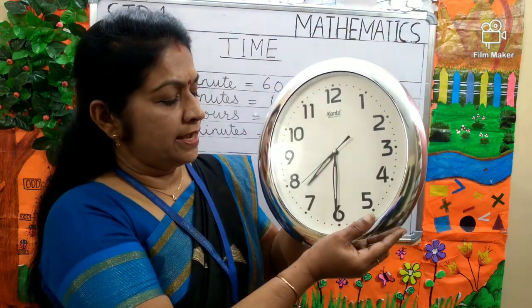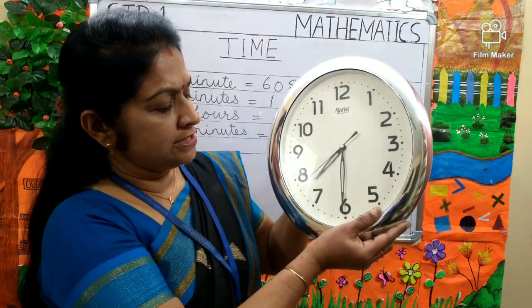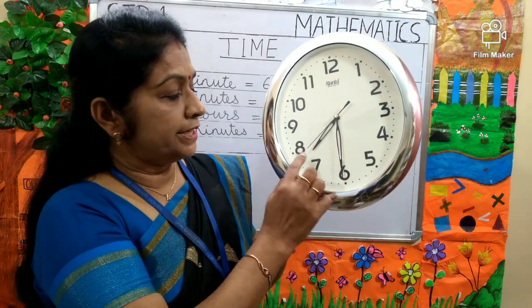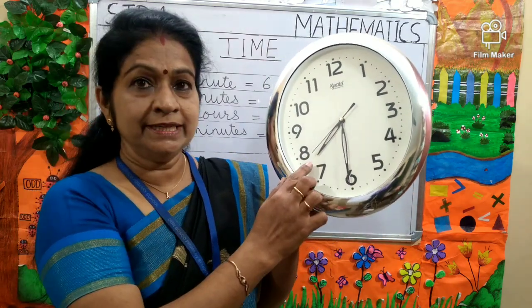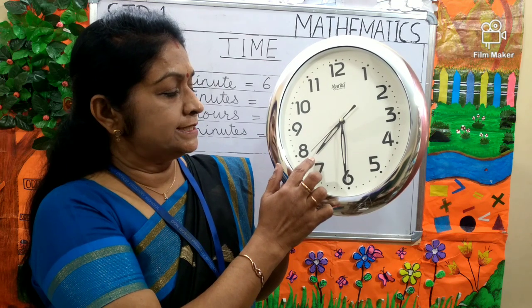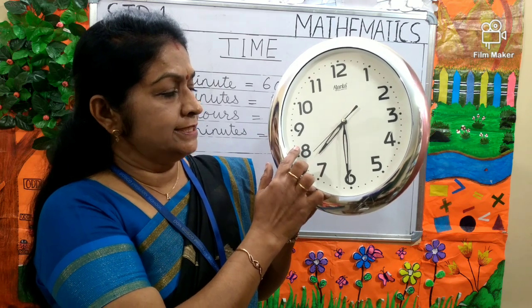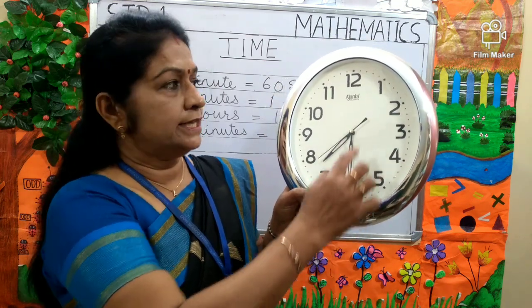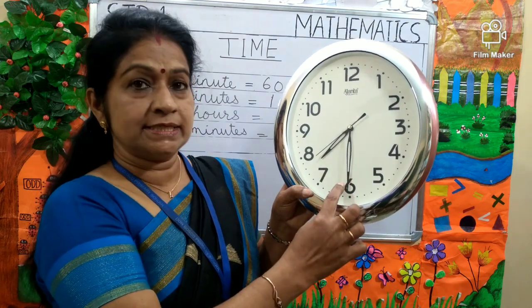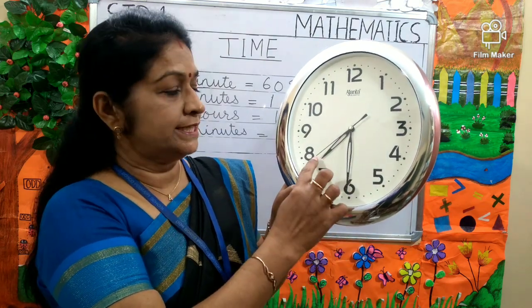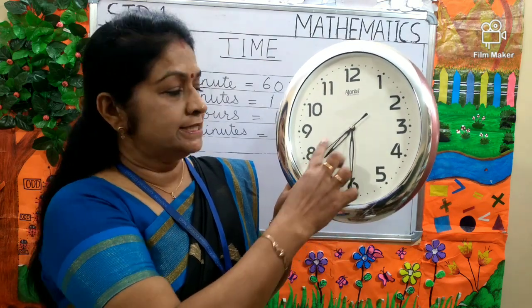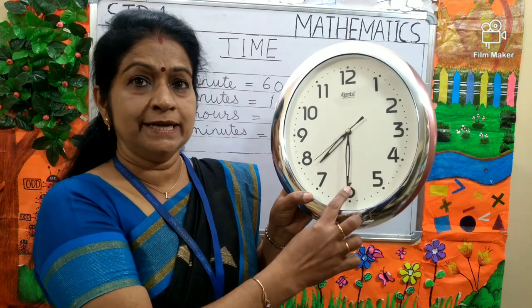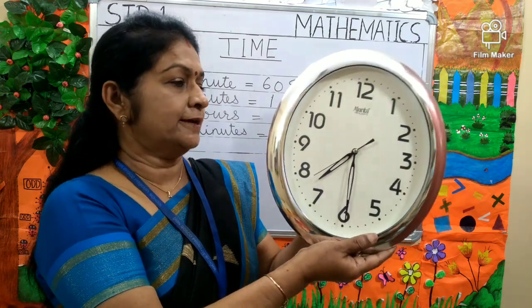Again it is moving and it has reached on 6. Can you tell me the time? It is between 7 and 8 and the minute hand is on 6. That means 30 minutes. So the time is 7:30, or you can say half past 7.